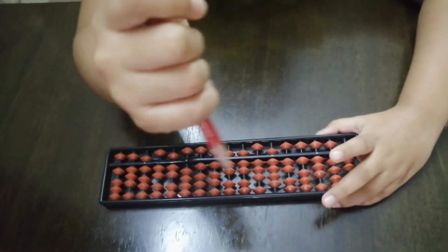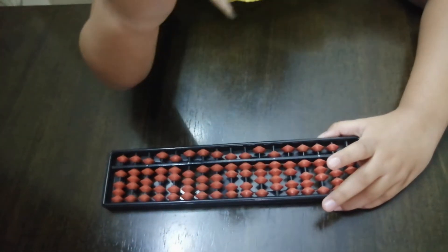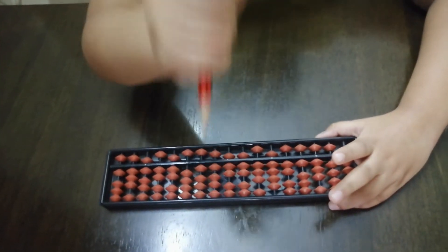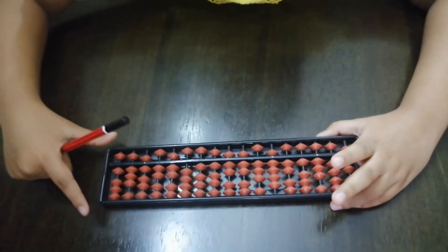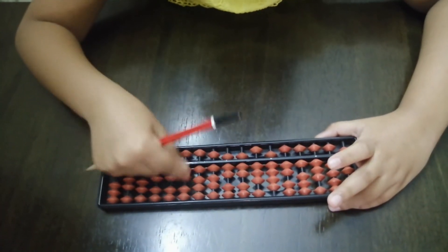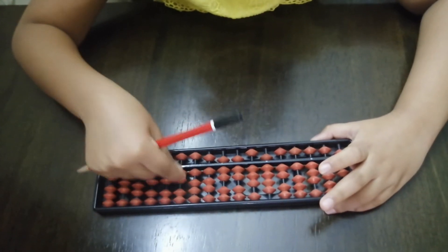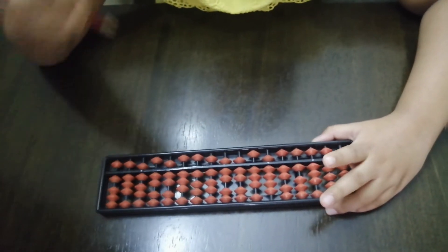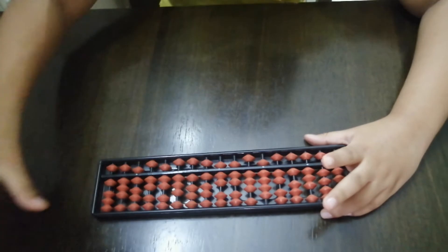In the other hand, we need to have a pencil. We need to take the thumb and the index finger to move the beads on the Abacus, and the other hand should hold the pencil. Don't keep it on the table.